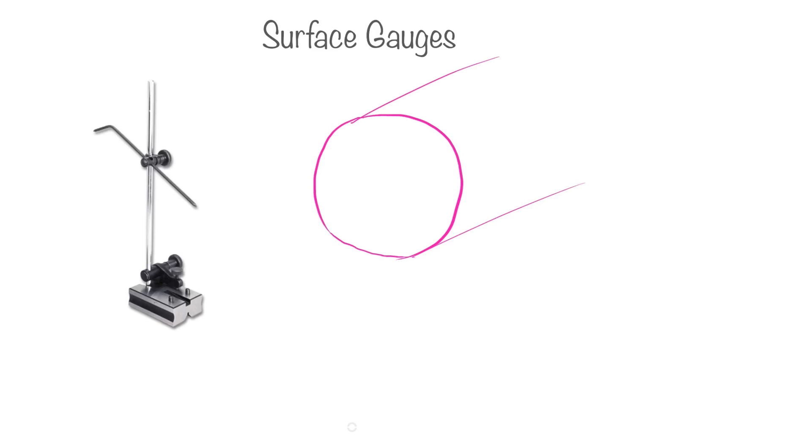And now we will place this surface gauge here and move it horizontally to draw a parallel line on this. And we will rotate this cylindrical object in this slot and we will again draw one more line.